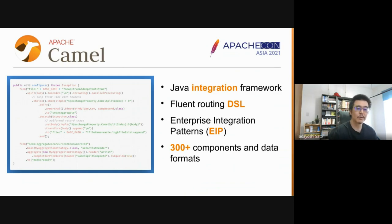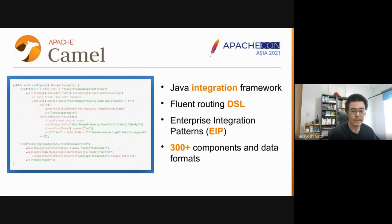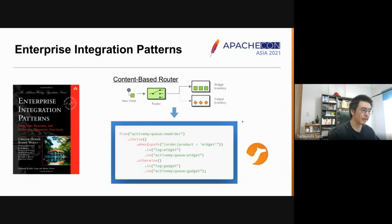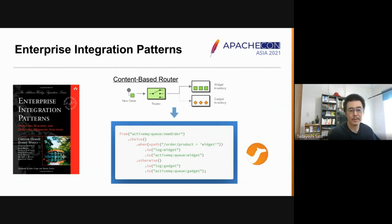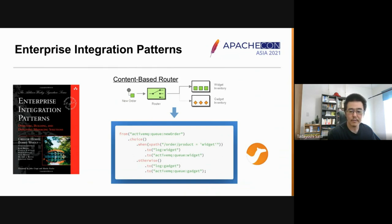Also, Apache Camel fully supports enterprise integration patterns, and it has more than 300 built-in components and data formats. What are enterprise integration patterns, or EIP? They are the design patterns in the area of systems integration — the accumulated industry knowledge and best practices. Camel supporting EIP means you can immediately access best practices anytime you integrate with Camel.